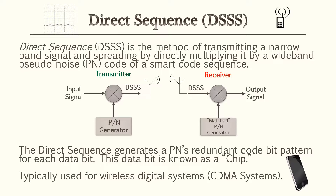The other common method is direct sequence. Direct sequence is the method of transmitting a narrow band signal and spreading it by directly multiplying it by the wide band pseudo noise code. Direct sequence generates a pseudo noise redundant code bit pattern for each data bit — this data bit is known as a chip. Unlike frequency hopping, you're spreading the whole transmission over the whole band, and this is typically used with wireless communication such as cell phones.